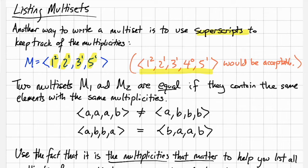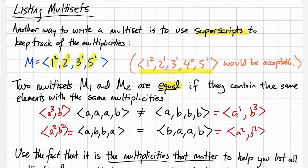We say two multisets are equal if they contain the same elements with the same multiplicities. For example, the multiset AAA, B is not equal to the multiset ABBB. On the other hand, ABBA is the same as BAAB because they both have two copies of A and two copies of B.